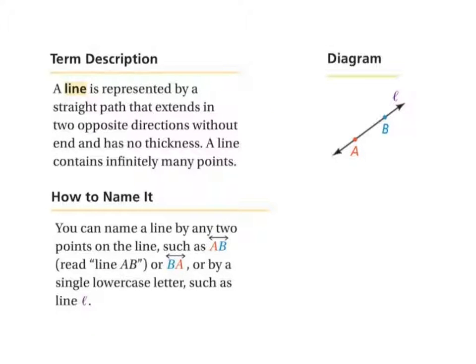The next undefined term is a line. A line is represented by a straight path that extends in two directions without end and has no thickness. Again, because points have no size, therefore a whole string of points is going to have no thickness. A line will contain infinitely many points.